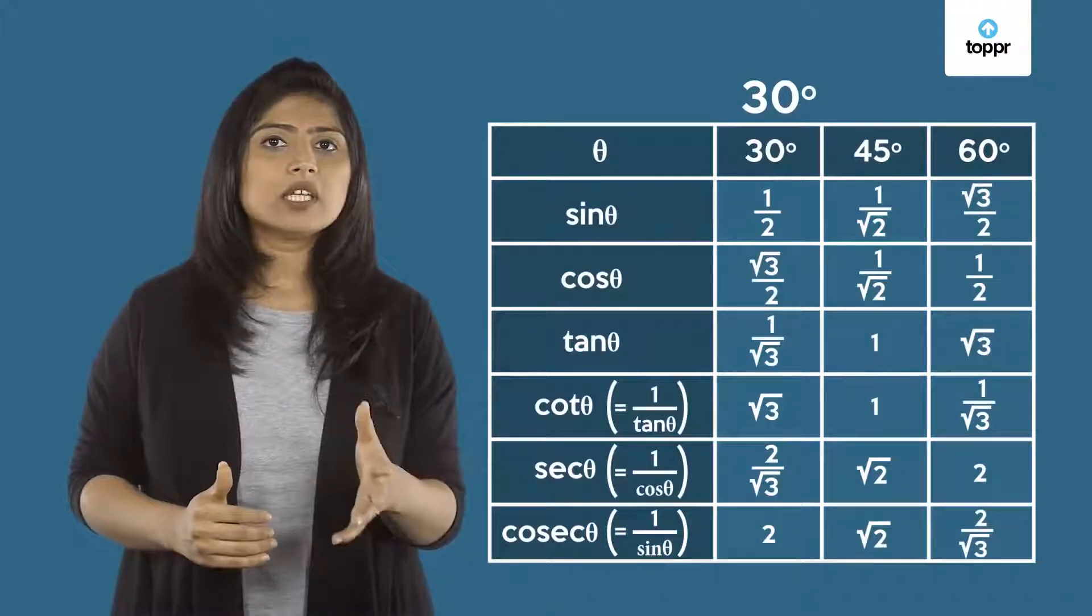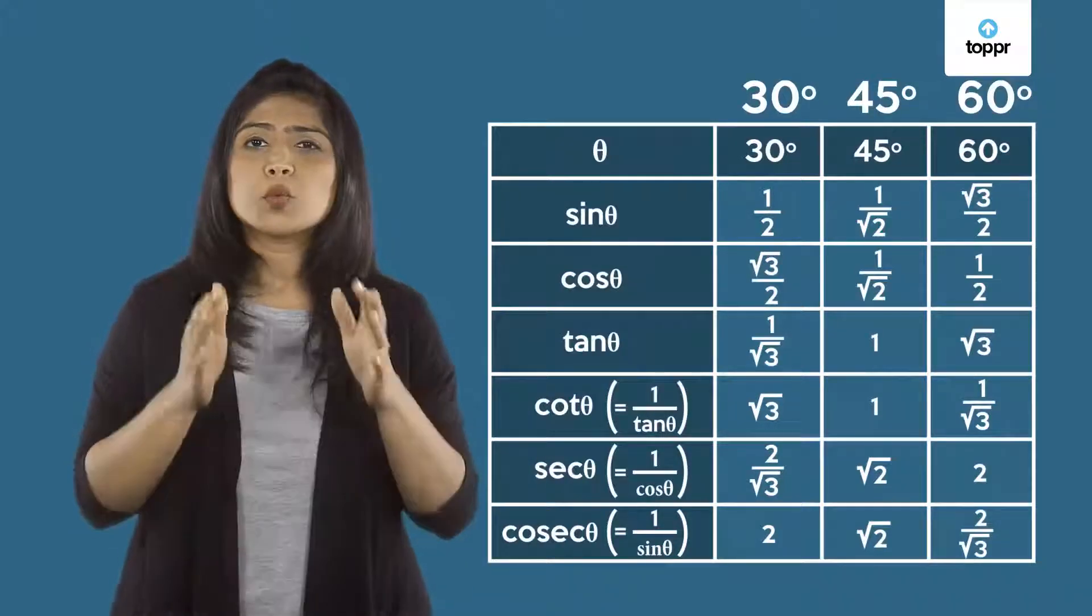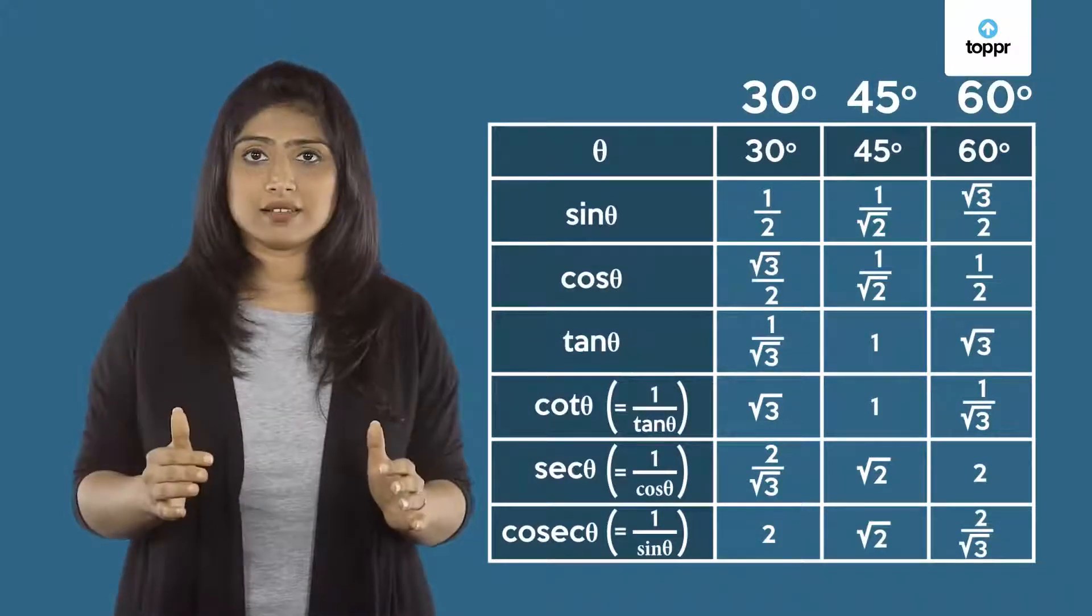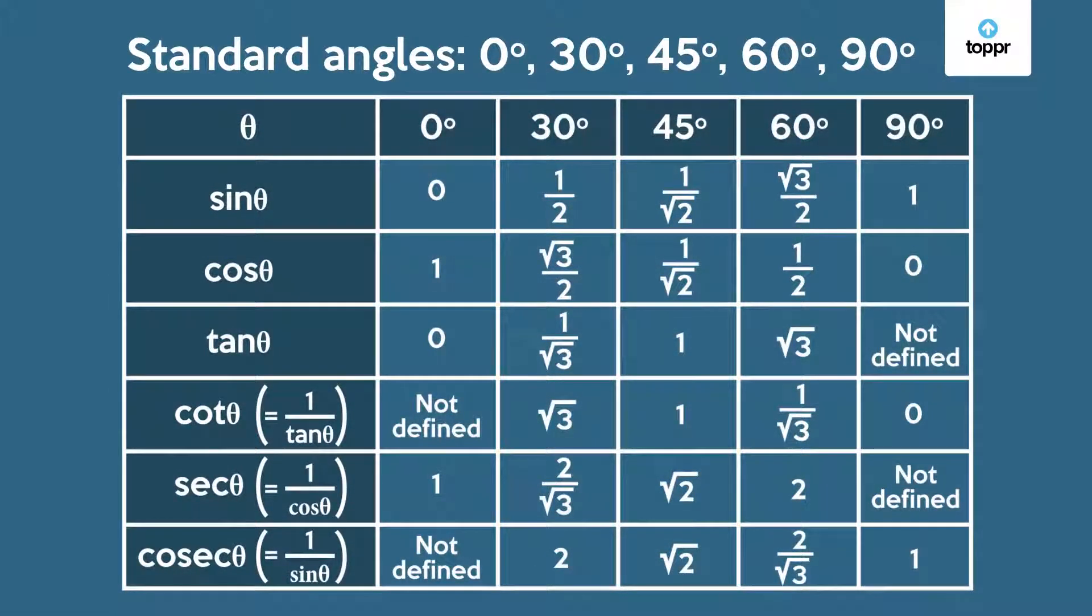In our previous lesson, we discussed three other special angles 30, 45 and 60 degrees which we call standard angles. So now we'll expand our list of standard angles to include 0 and 90 degrees.